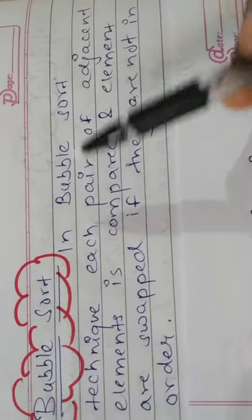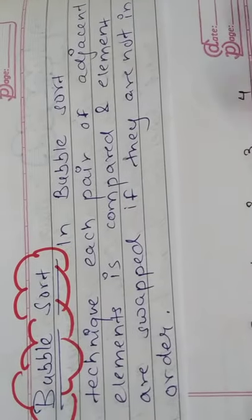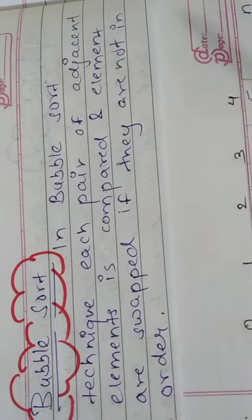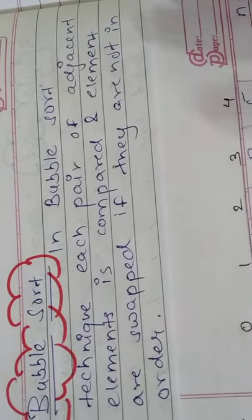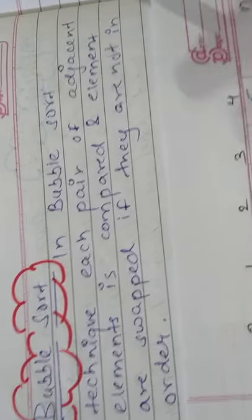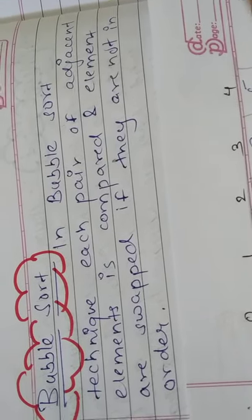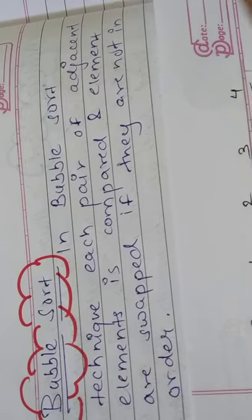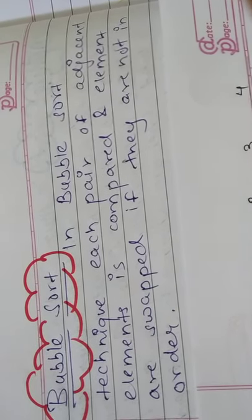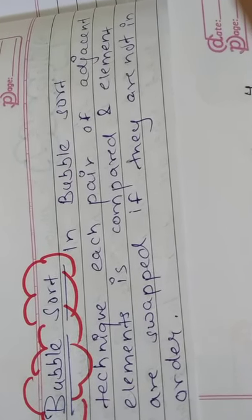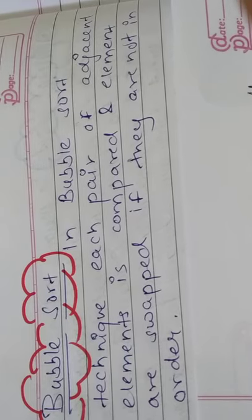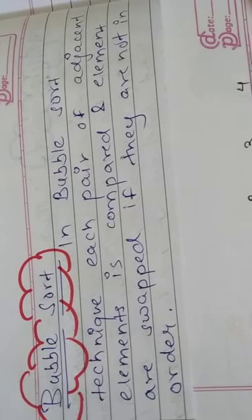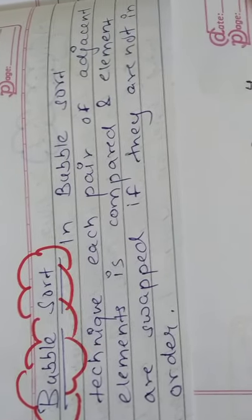Bubble sort is nothing but a technique in which each pair of adjacent elements is compared and the elements are swapped if they are not in order. If they are in order then they stay the same; if they are not in order then they are swapped. We will understand the definition using an example.